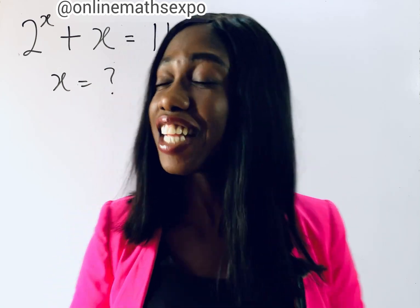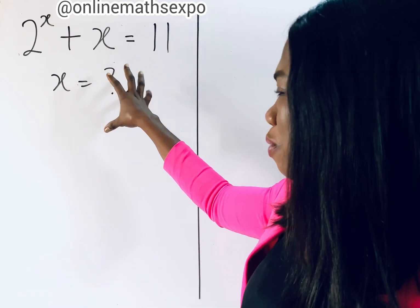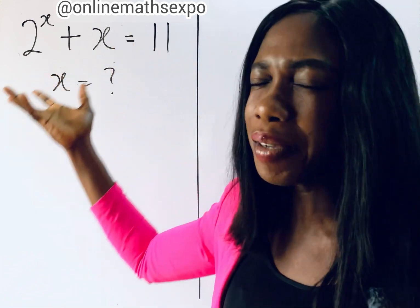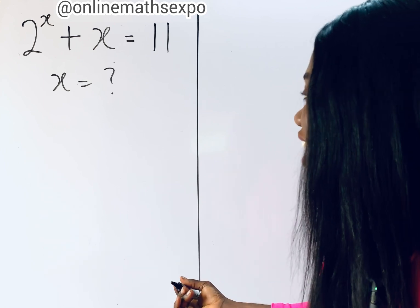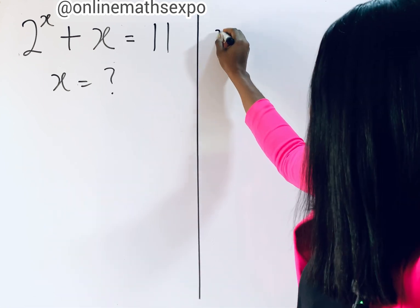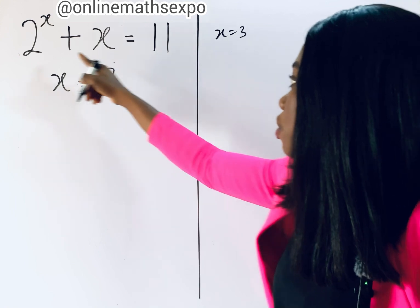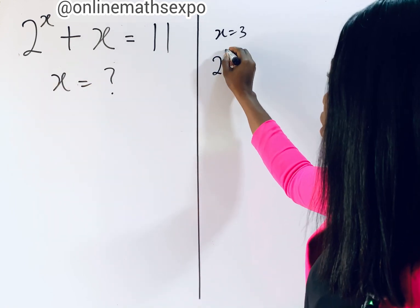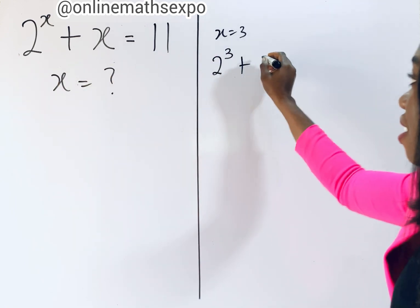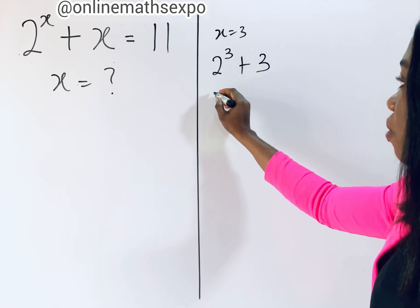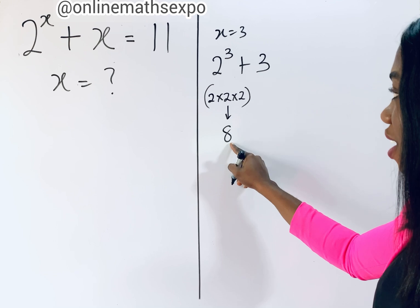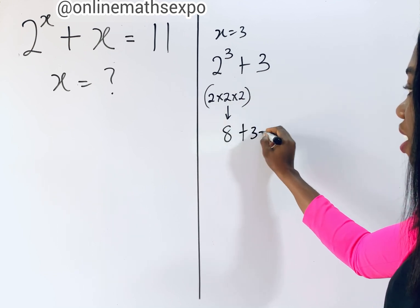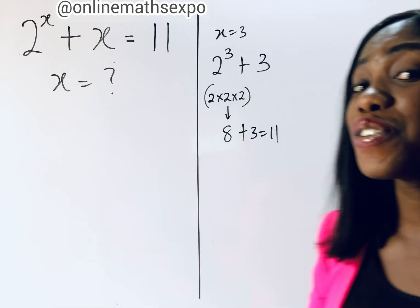Welcome, amazing friends! You're going to learn how to solve this beautiful equation. By inspection, you can easily say that x is 3. When you put x as 3, you get 2 to the power of 3 plus 3, and 2 to the power of 3 is 2 multiplied 3 times, which gives you 8, and 8 plus 3 gives you 11.